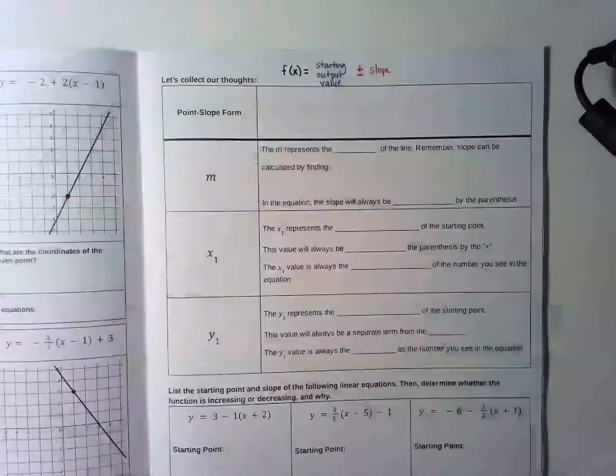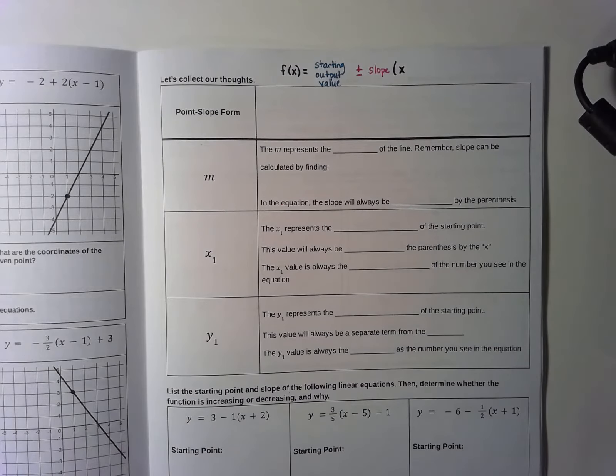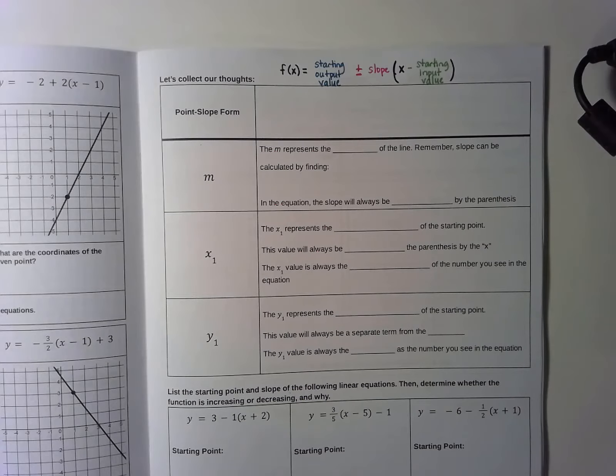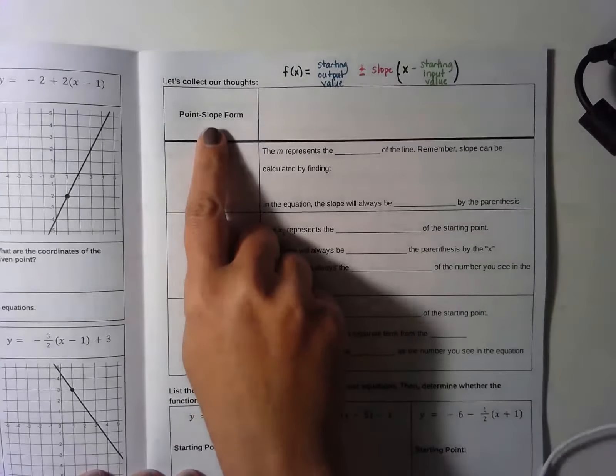Then you're going to see the slope in the equation, followed by parentheses with an x. Depending on the starting x value, you might either see just an x, or you might see x minus the starting input value. So if our table started at 1, we would have written x minus 1 there. What we're going to talk about now is a different way of writing the same thing that uses a shortcut notation.